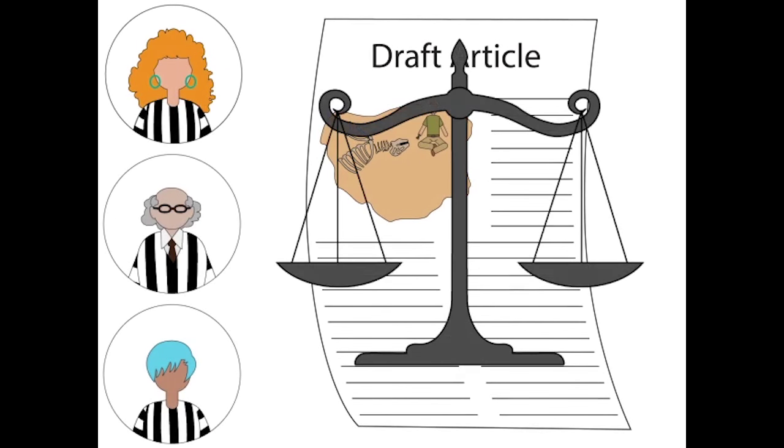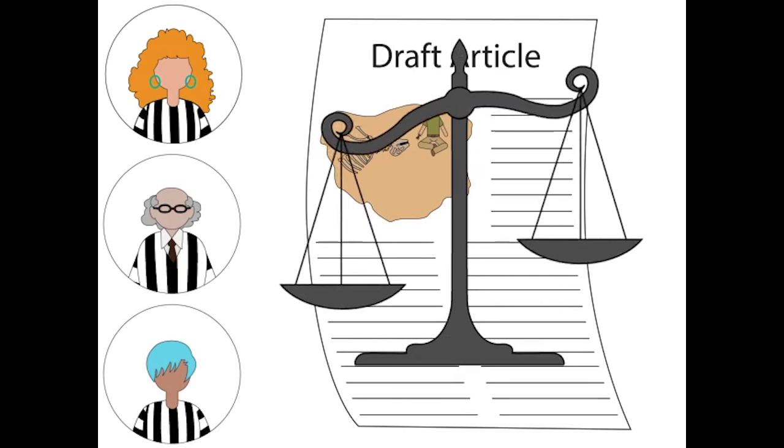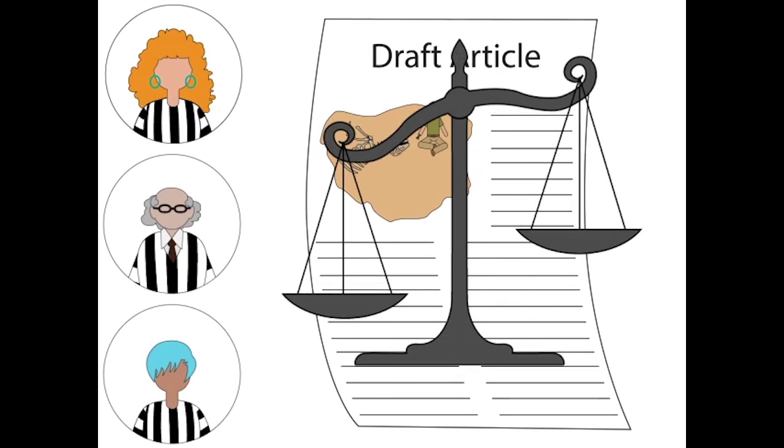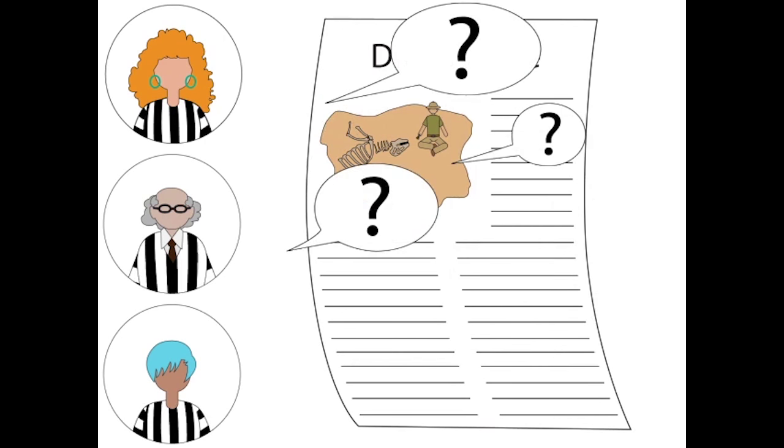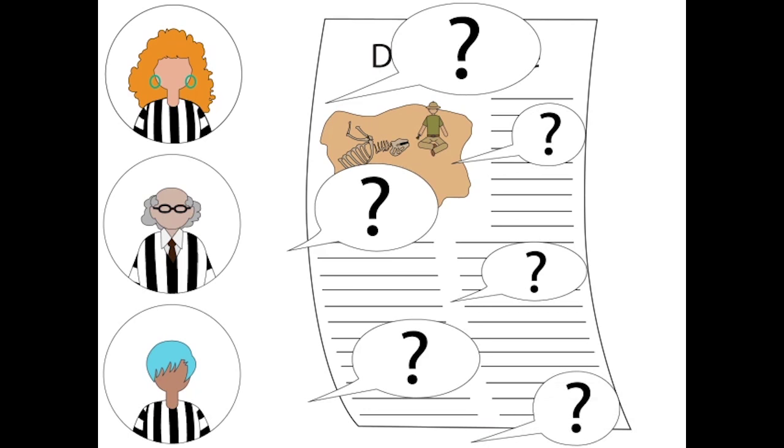Each reviewer evaluates the article by asking questions to judge the quality and significance of the research. Questions like: What is this research about? Is it interesting? Is it important? Is the methodology sound? Are the conclusions logical? And are the findings original?